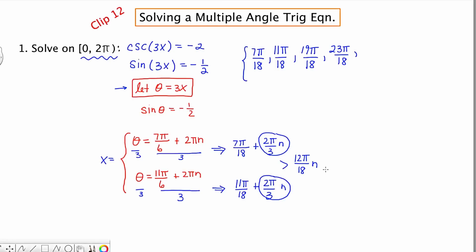Finally, if I let n equal 2, then I've got 24 pi over 18, which would give me 31 pi over 18. And then 24 plus 11 is 35 pi over 18. Now, if I were to let n equal 3, then I've got 36 pi over 18, which is 2 pi. And if I add on to that, I'm outside of the interval. So I'm going to stop here.